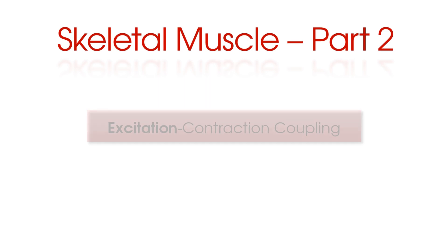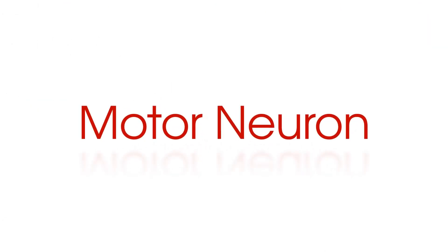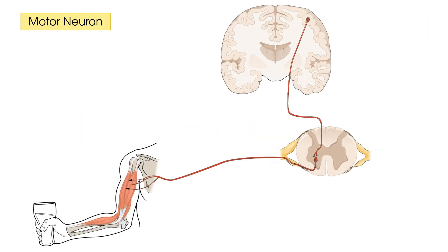Firstly we're going to look at the motor neuron and then the neuromuscular junction. The action potential that allows voluntary muscle contraction begins in the motor cortex of your brain. As a side note, reflexes which cause muscle contraction are automatic and occur at the level of the spinal cord. With voluntary muscle contraction, the action potential is relayed down from the brain through the spinal cord via nerve fibres called tracts.